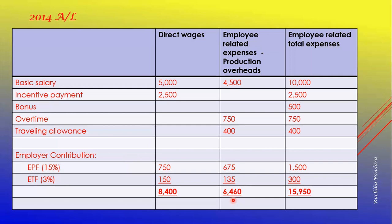Employee-related total expenses is the addition of all four categories. Basic salary total: 5,000 plus 3,000 plus 1,500 plus 500 is 10,000. Incentive payment 2,500, overtime 750, traveling 400, bonus 500. Total employer EPF contribution is 1,500, ETF 300. The addition is 15,950.